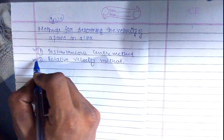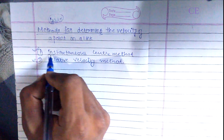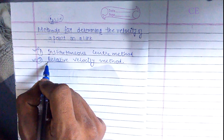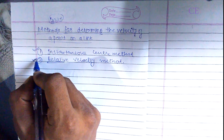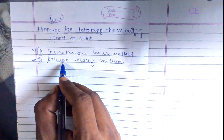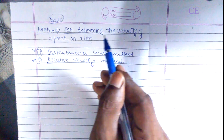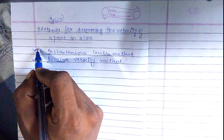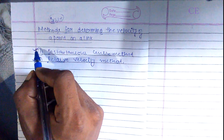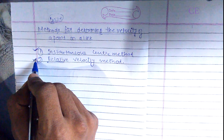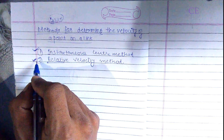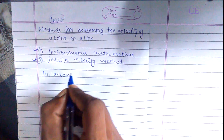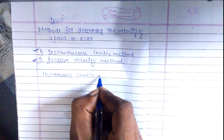The instantaneous center method is for simple cases, and the relative velocity method is for complex types. If there is any 2D motion, we can easily find out the velocity of any point using either method. The relative velocity method requires a geometry box and drawing diagrams, whereas the instantaneous center method does not require any scale or pencil. In this video, we will discuss the instantaneous center method.